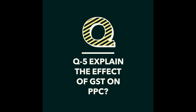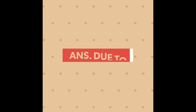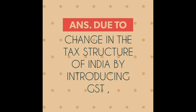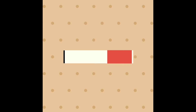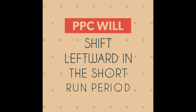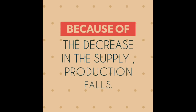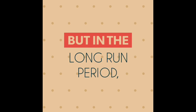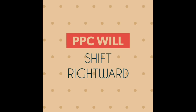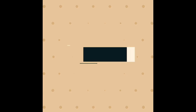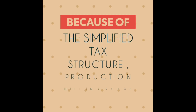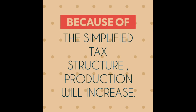Question number five: explain the effect of GST on PPC. Due to the change in the tax structure of India by introducing GST, the PPC will shift leftward in the short run period because of the decrease in supply and fall in production. But in the long run period, the PPC will shift rightward because of the simplified tax structure, leading to an increase in production.